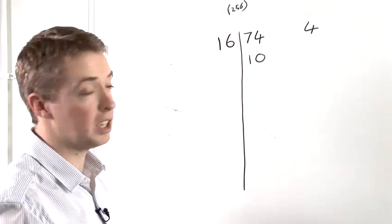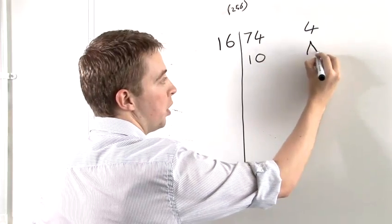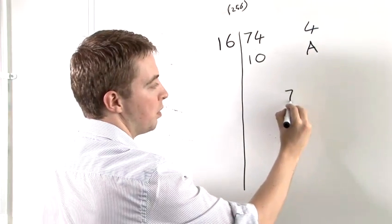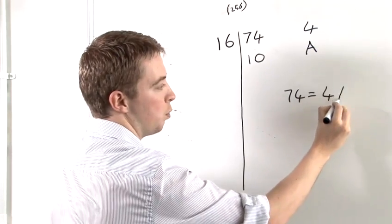Now, 10 is obviously a single digit in hexadecimal simply represented by A. Therefore, this tells us that 74, when written as a hexadecimal number, is 4A.